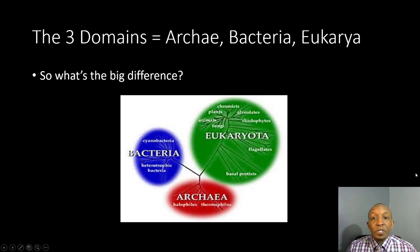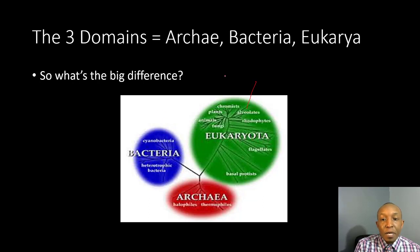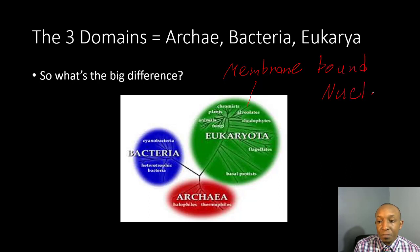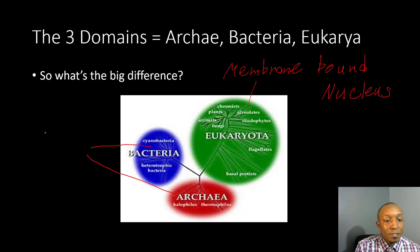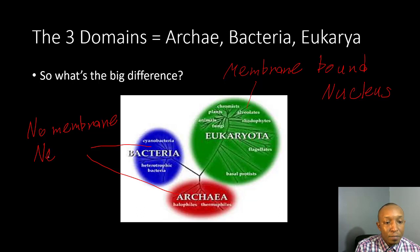Now let's take a look at our big three domains: archaea, bacteria, and eukarya. What's the big difference? Eukarya, or eukaryotes, have membrane-bound organelles — they have a membrane-bound nucleus. Bacteria and archaea do not have a nucleus, so no membrane-bound nucleus. This is the largest difference between bacteria, archaea, and eukaryota.